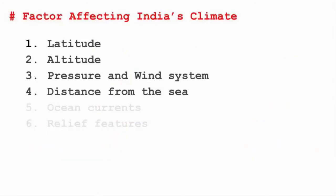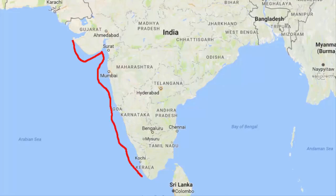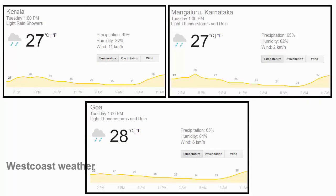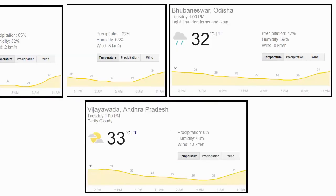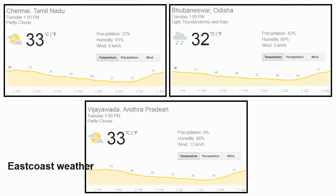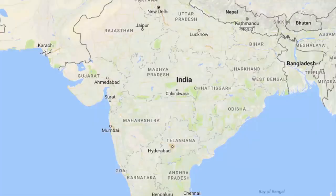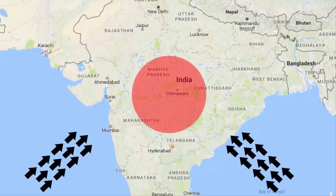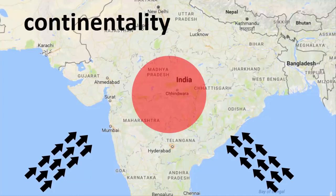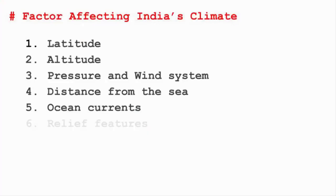The fourth factor is distance from the sea. If you are residing at coastal areas, you will notice there is hardly any change in the weather conditions — you will be constantly facing wind from the sea. But as you move away from the coastal areas towards the central part of the land mass, you will start to witness extreme weather changes, like very hot during summer and very cold during winters. This condition is known as continentality.